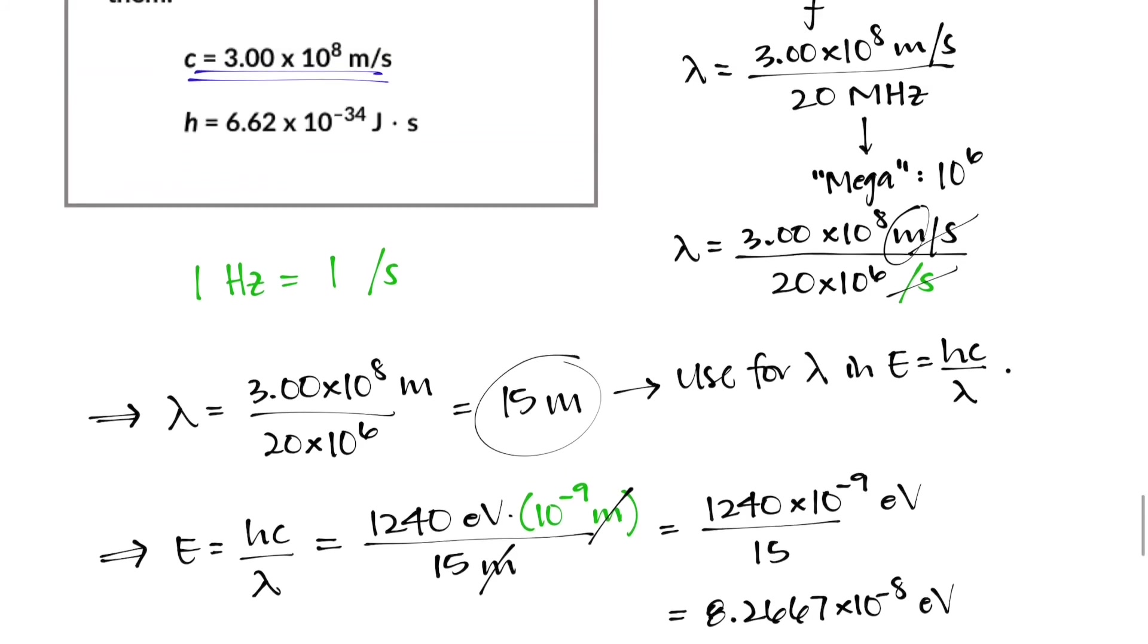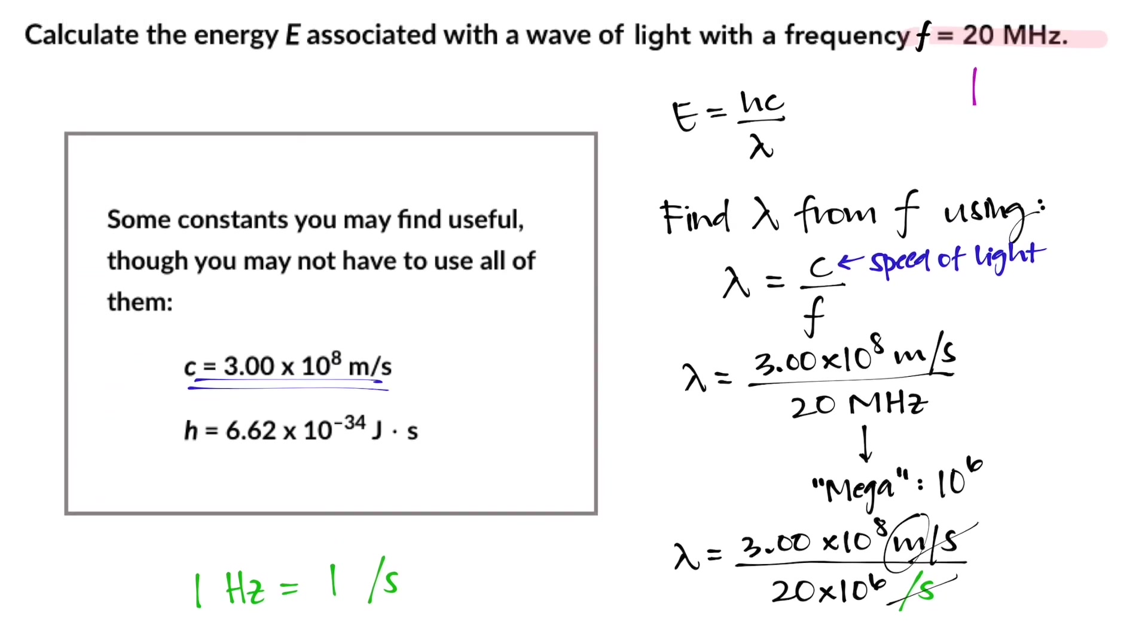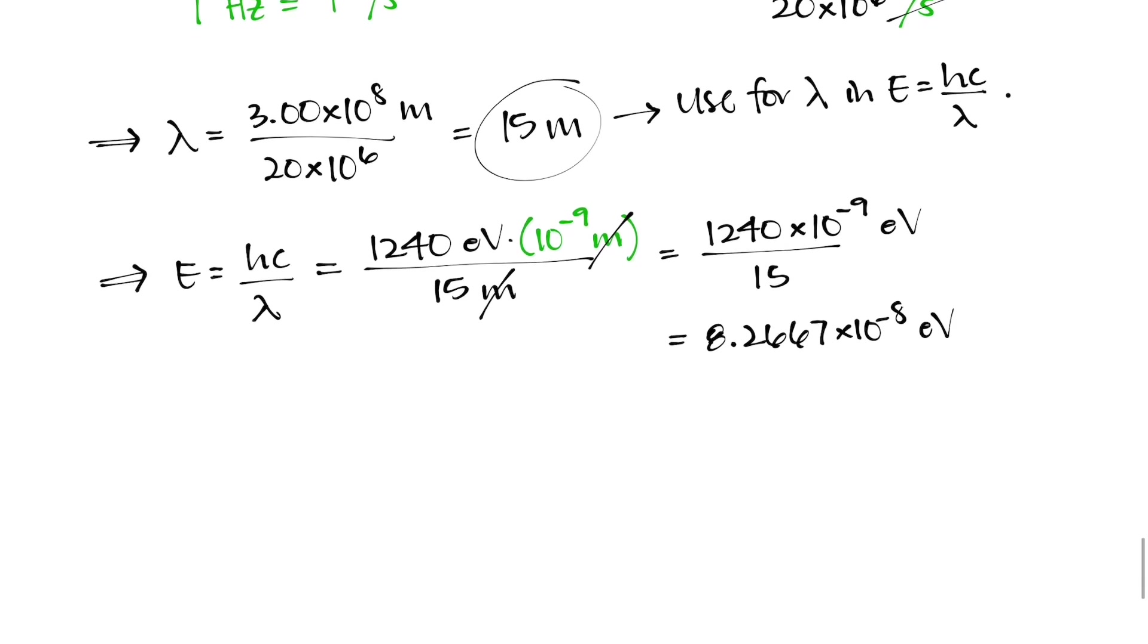So I go back to the original problem, and in my original problem I have a frequency that's given to me with 20 megahertz, and the number 20 only has one significant figure in it. So when I go back down to my final answer, I have to cut off my number immediately after the first digit.